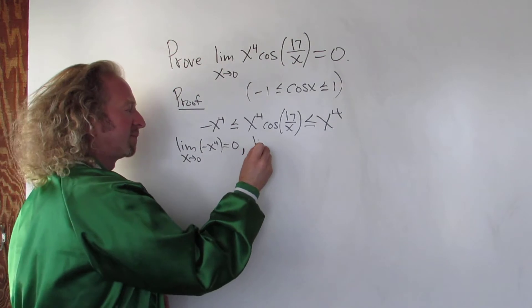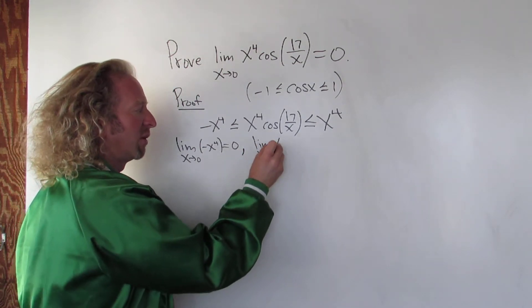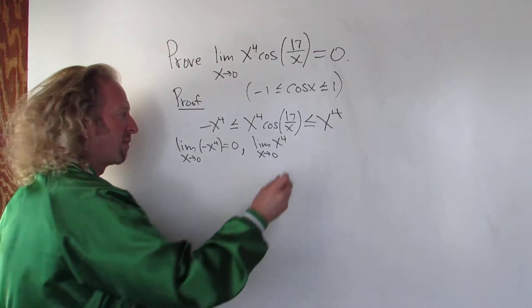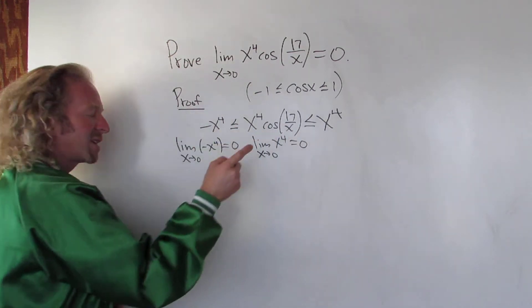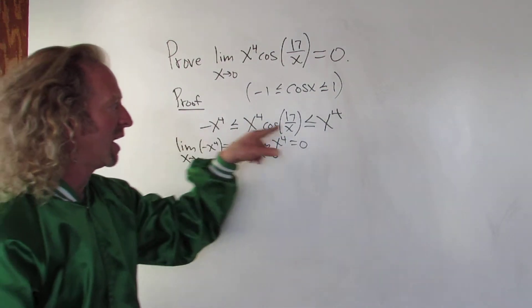Likewise you take the limit here as x approaches 0. You plug in 0, so you get 0 to the 4th. No problems there, so you just get 0. So as x approaches 0, this approaches 0 and this approaches 0. And this function is trapped in the middle.